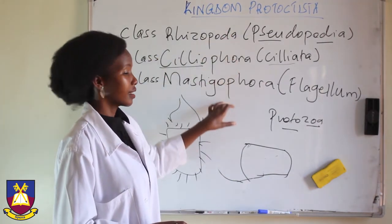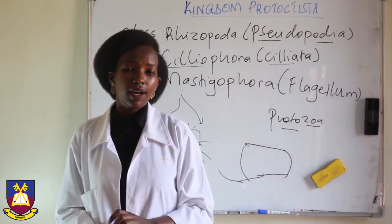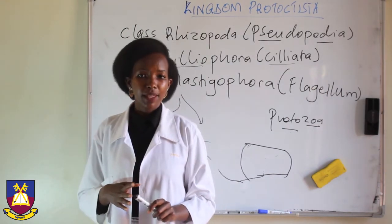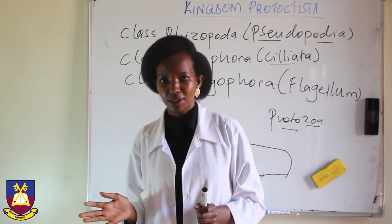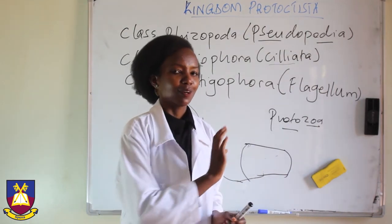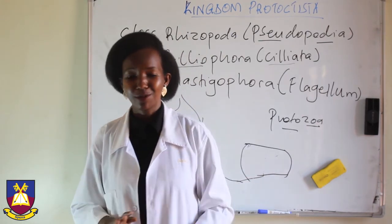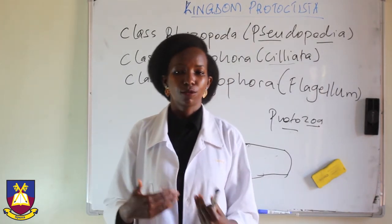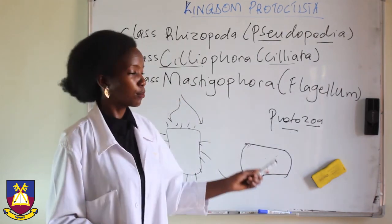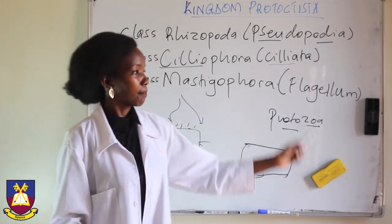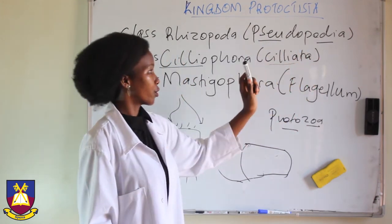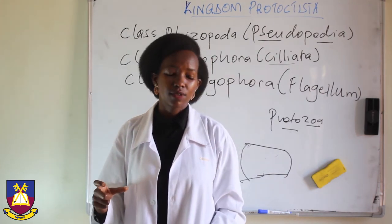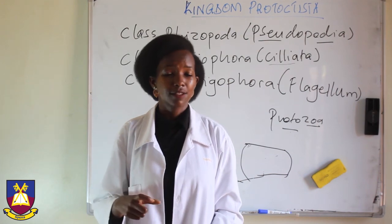Those are the classes of Phylum Protozoa. Characteristically, they are unicellular. Secondly, they are mainly found in freshwater or marine environments — it's not easy to find them on bricks, on walls, or on your shoes; you'll most likely find them in places that have water. As we have seen, they move from one place to another by help of pseudopodia, cilia, or flagella. Now we are going to look at the details of these organisms, starting with amoeba.